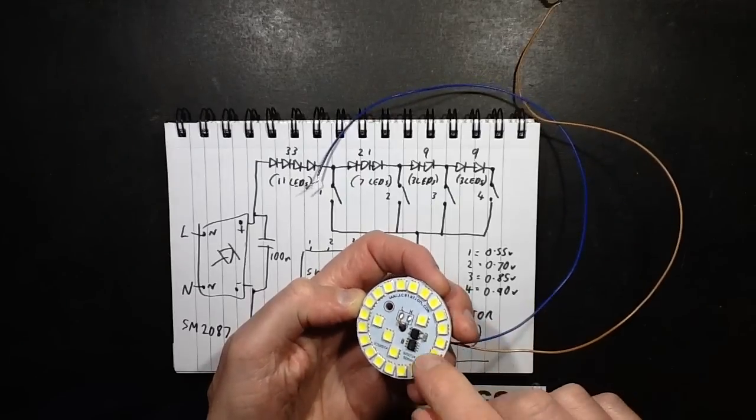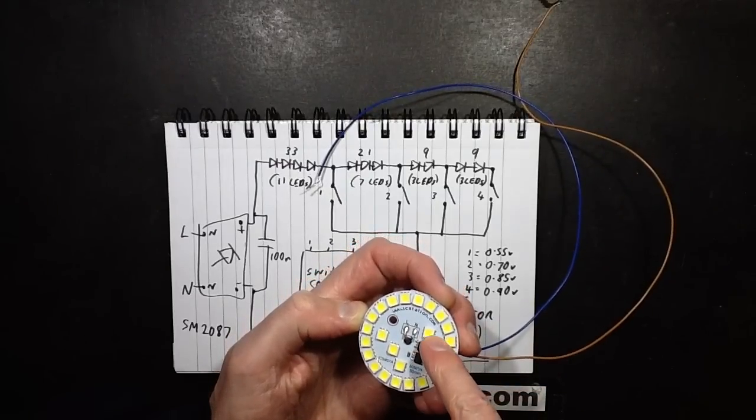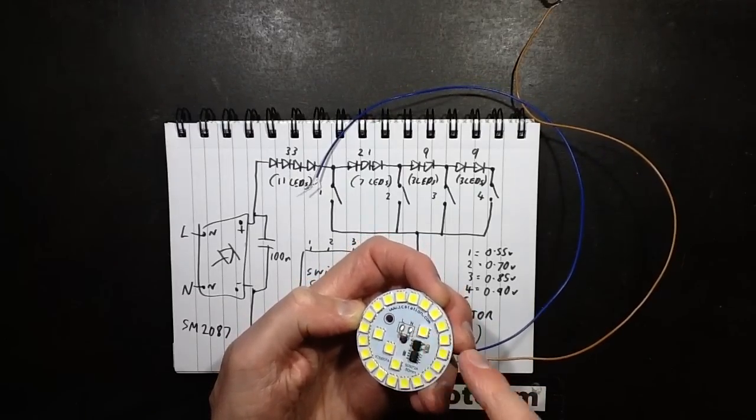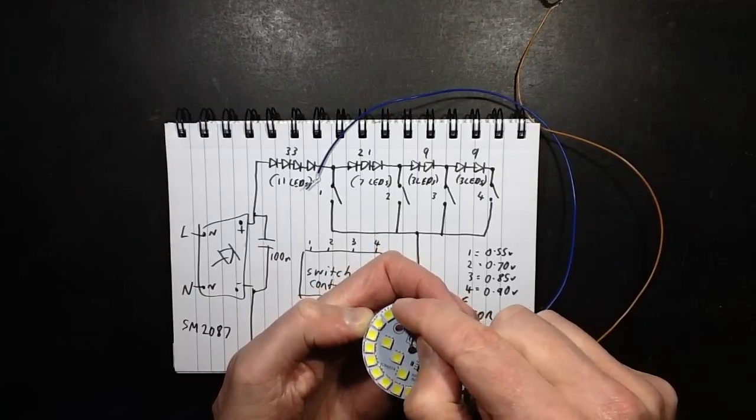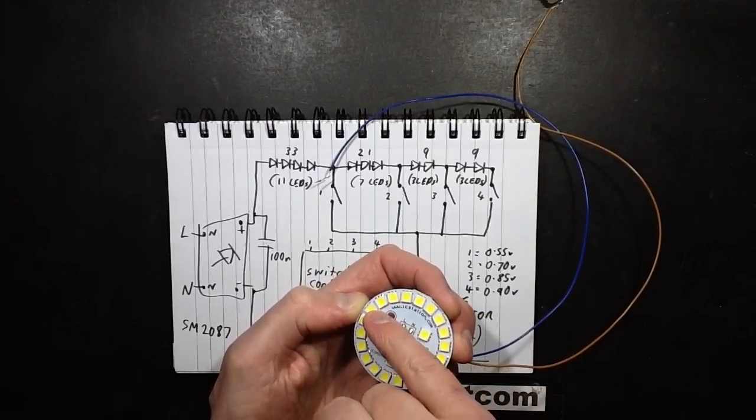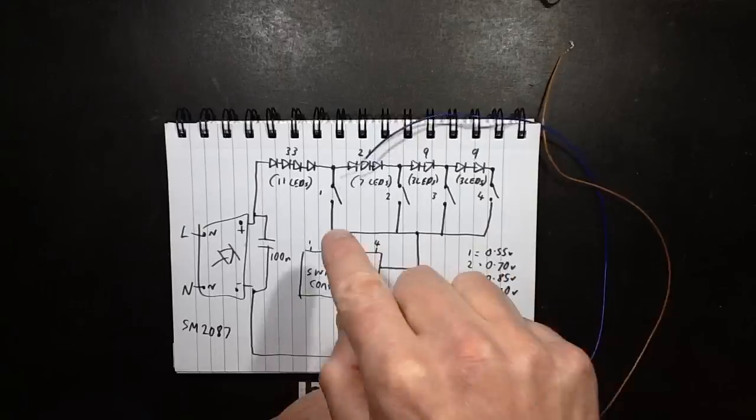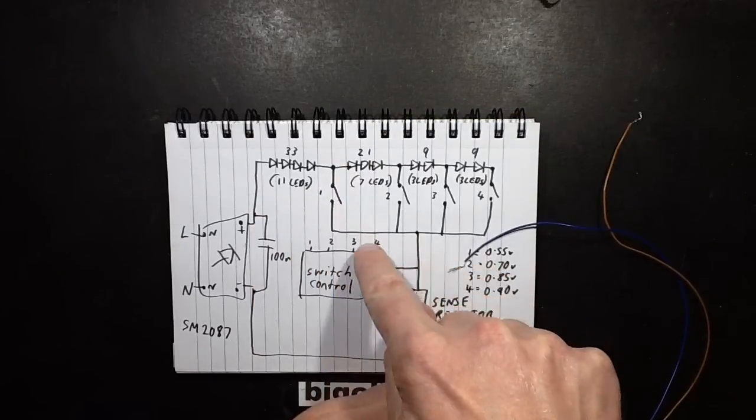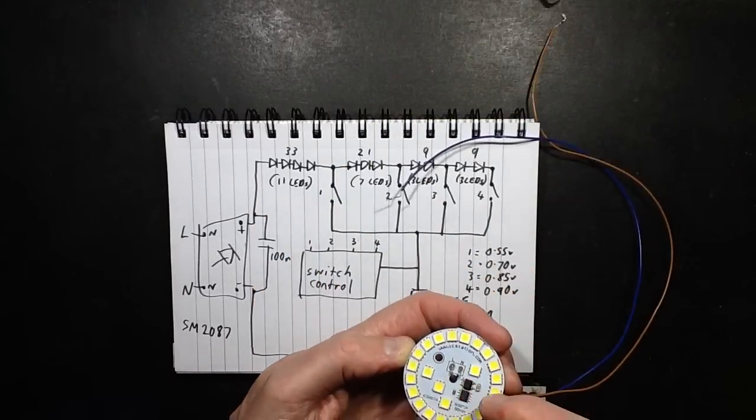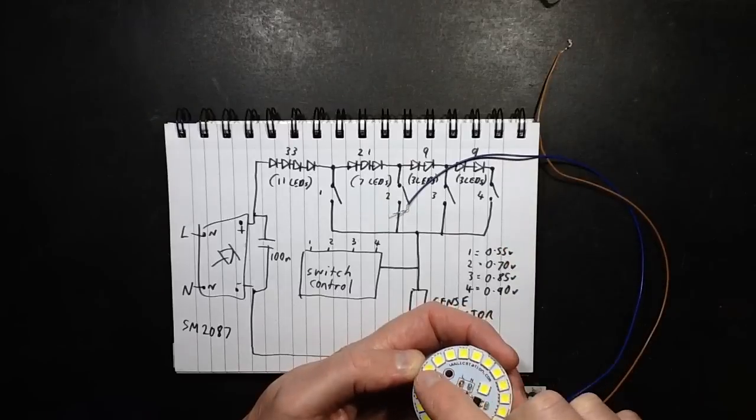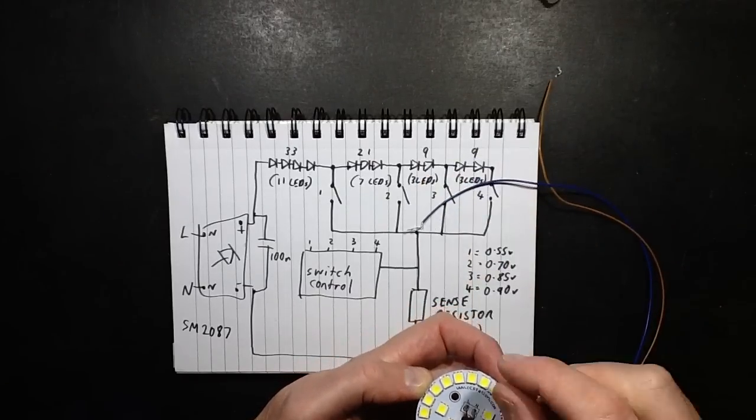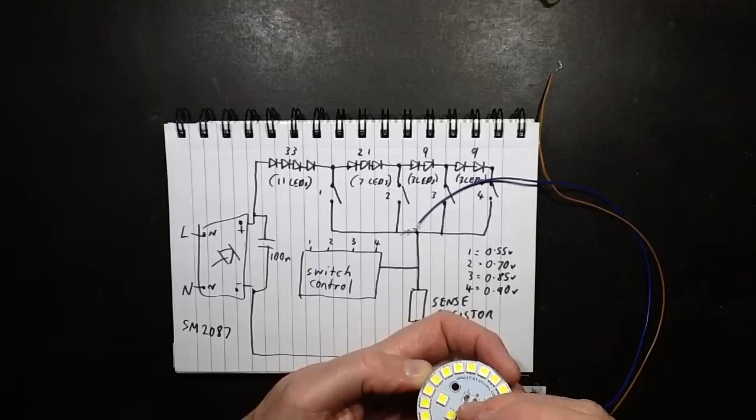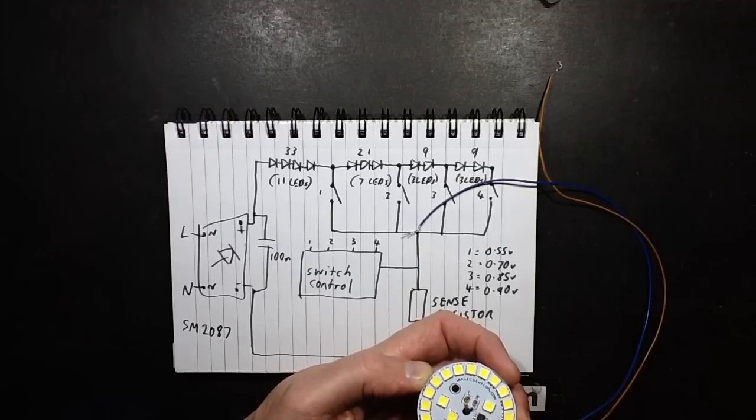From the positive, it comes off the rectifier and goes to this LED, and then it loops out and it starts working its way with all the LEDs in each chip in series until it gets up to the 11th LED. And then it comes to Switch 1 in this chip. Then there's another 7 LEDs after that and then it goes to Switch 2. Then another 3 goes to Switch 3, and then another 3 LEDs goes to Switch 4.